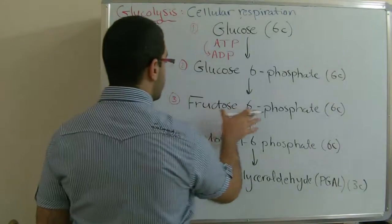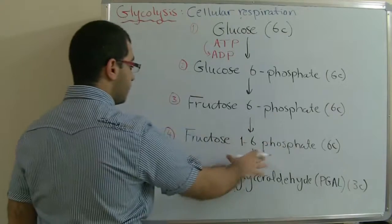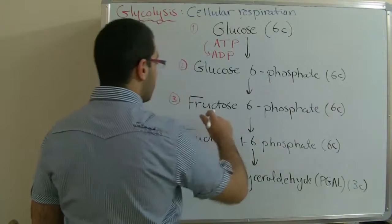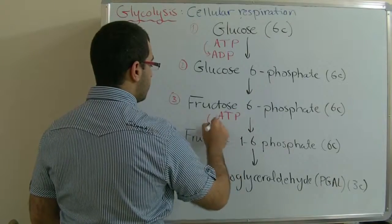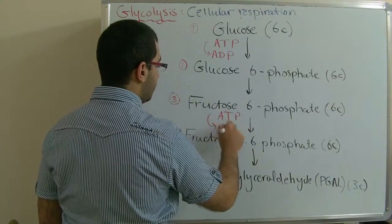During the change of fructose 6-phosphate into fructose 1,6-bisphosphate, we have also an ATP changed into ADP.